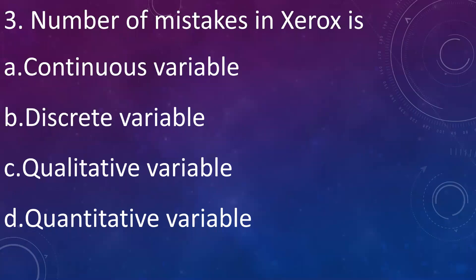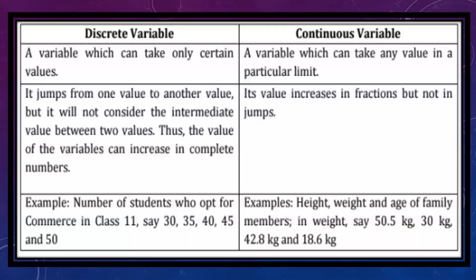Number of mistakes in a Xerox is: A: a continuous variable, B: a discrete variable, C: a qualitative variable, D: a quantitative variable. Answer is B: discrete variable. Number of mistakes in a Xerox is an example of a discrete variable. A discrete variable is a variable which can take only certain values — it jumps from one value to another and does not take values between two numbers.